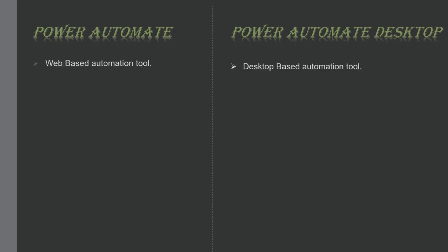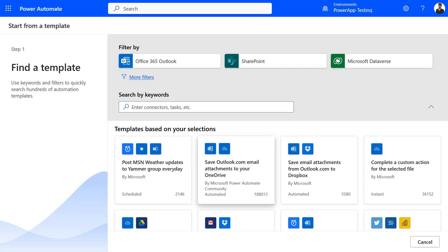Let's discuss the differences. Power Automate is a web-based automation tool whereas Power Automate for desktop is a computer software. Power Automate has pre-built templates which you can use, but Power Automate desktop does not have this feature. As you can see here, you can choose any of these templates and it will give you a pre-built flow.